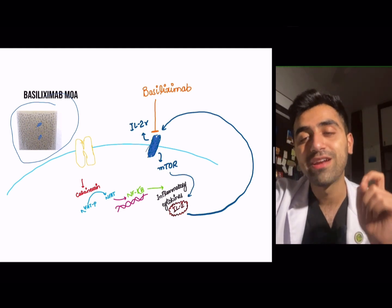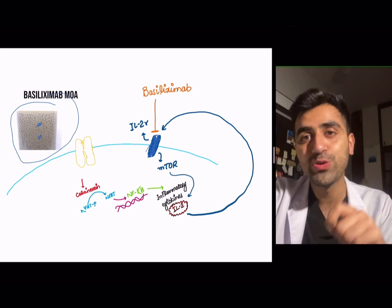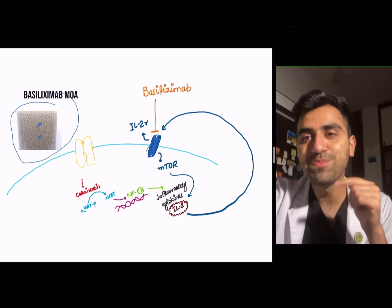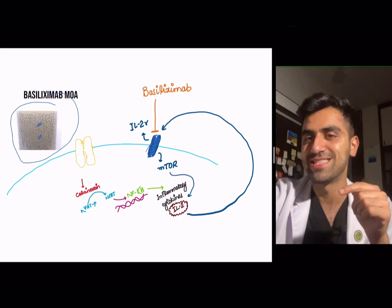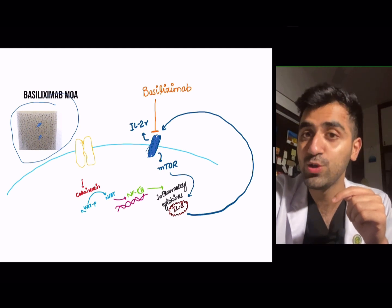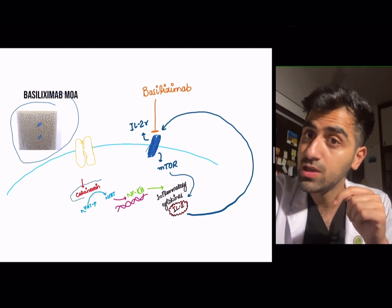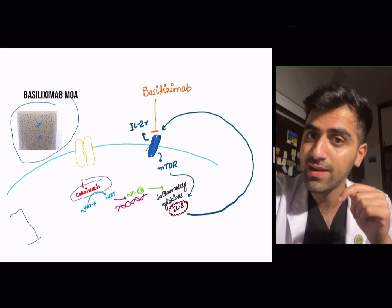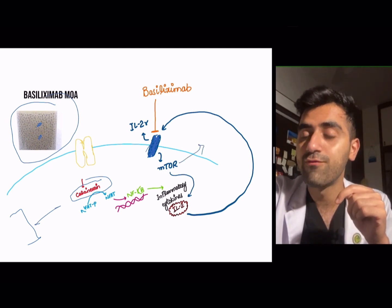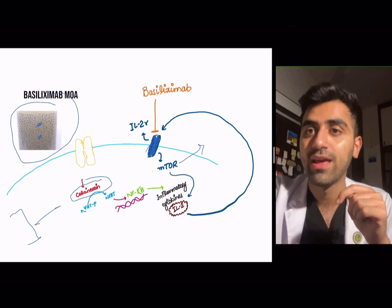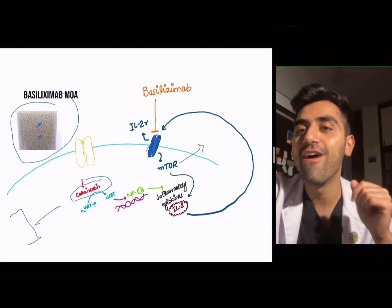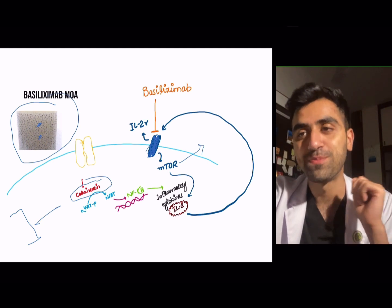Basiliximab is a monoclonal antibody that acts on the IL-2R receptor. To summarize the sites of action: cyclosporine and tacrolimus act on calcineurin; sirolimus acts on mTOR; and basiliximab acts on the IL-2 receptor.